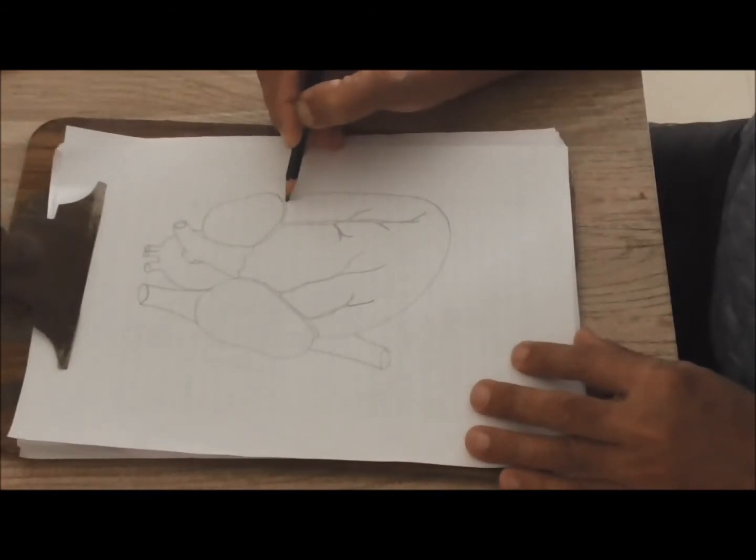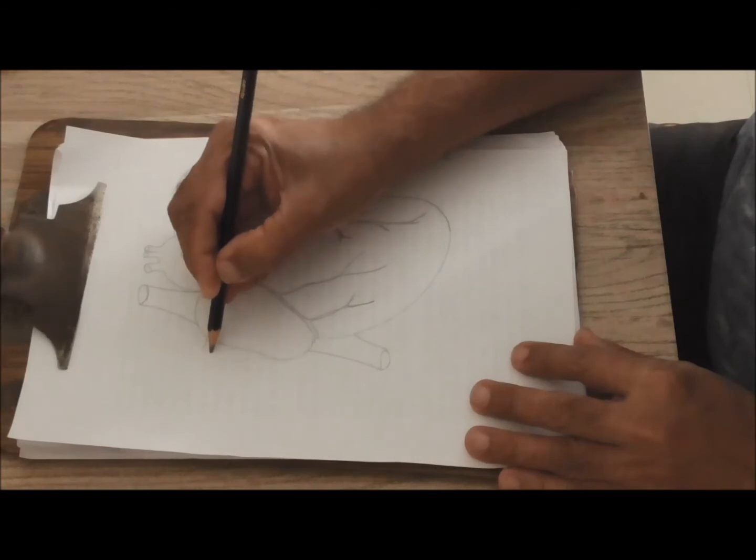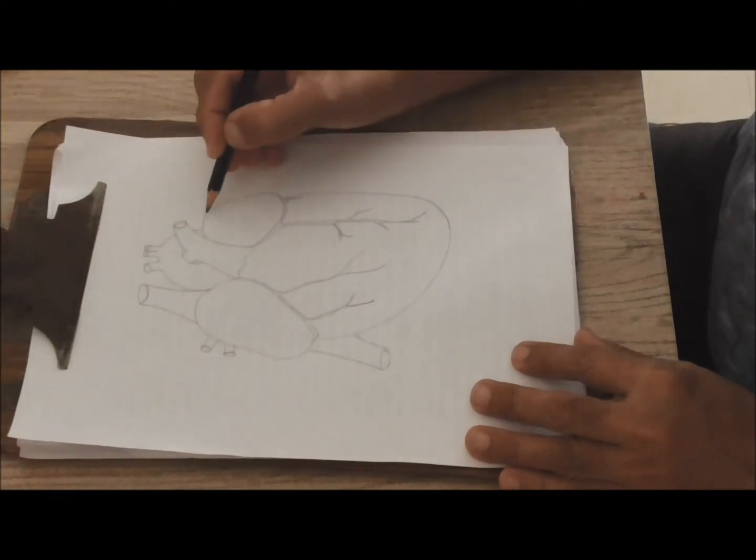Now these are the pulmonary veins, bringing oxygenated blood from the lungs. Right pulmonary, left pulmonary, isn't that simple.